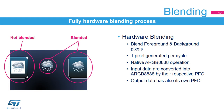The fully hardware blender allows blending of a foreground image and a background image with transparency. This can be used to draw bitmap images of any shape with a perfect rendering. One pixel is generated per cycle, making this complex operation much more efficient than if done by the CPU. The resulting pixel can be coded independently from the source thanks to the output pixel format converter.